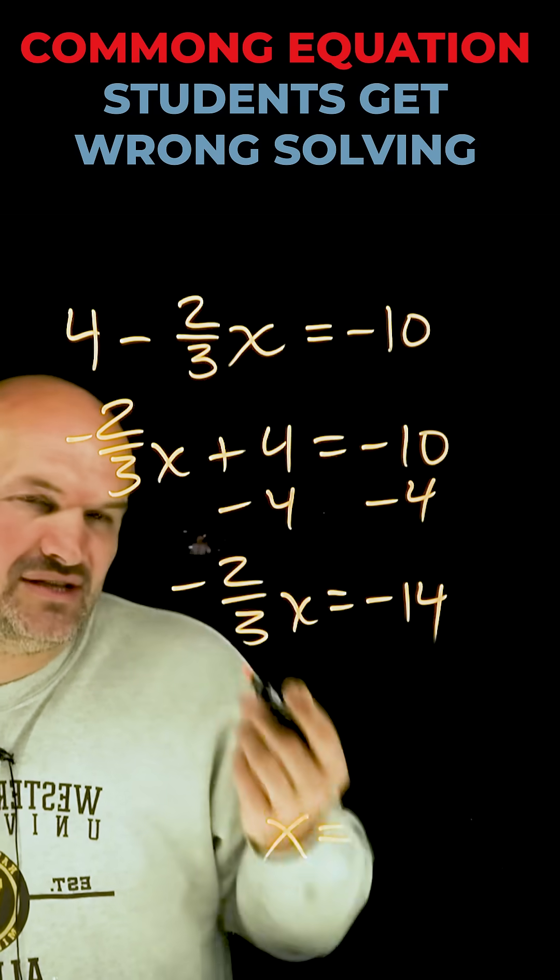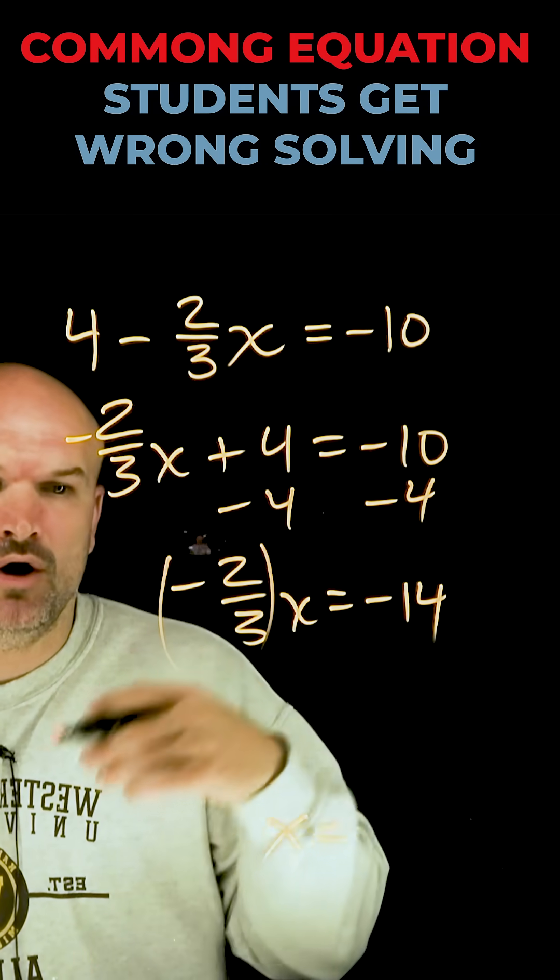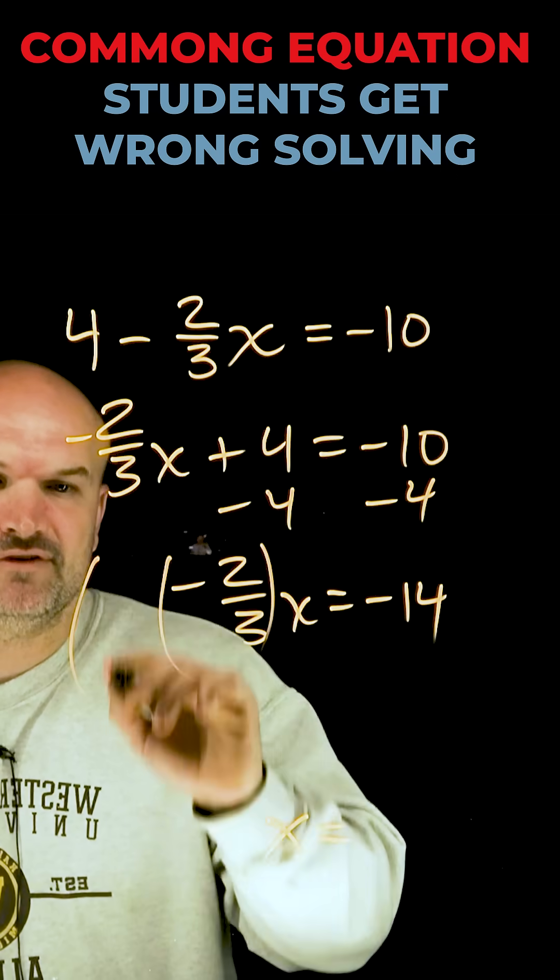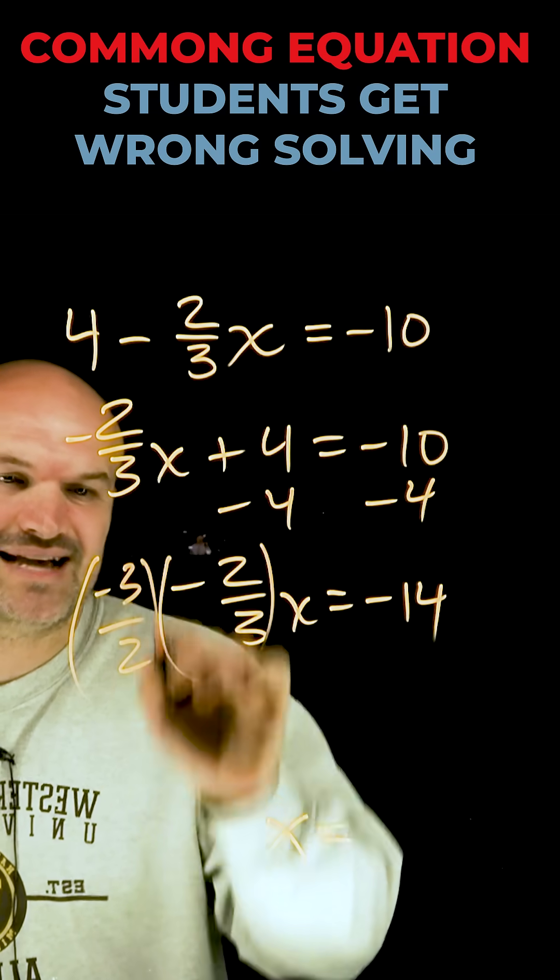Yes, you could divide by negative two-thirds, but in my opinion I like to think about what number can I multiply by negative two-thirds that's going to get to 1. And if you're thinking the reciprocal, then you are exactly right.